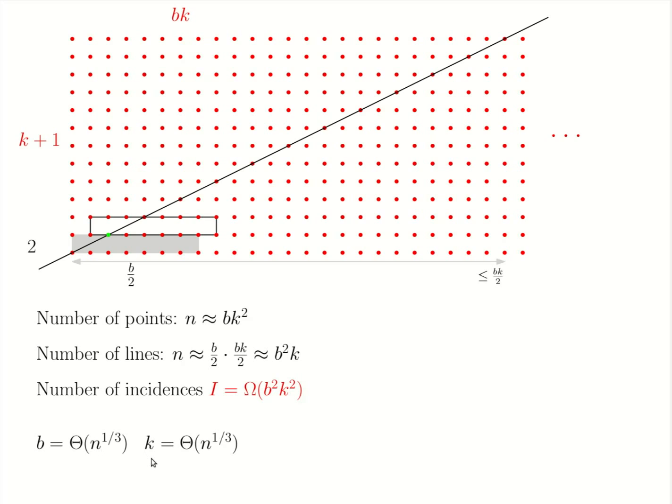It is easy to see that such a choice is guaranteed by picking b asymptotically equal to n to the one third and picking k asymptotically equal to n to the one third as well. If you do this choice, you will get a grid that will create roughly n to the four thirds incidences between points and lines.